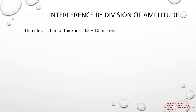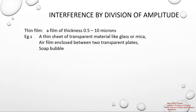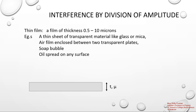So what is a thin film? It can be any transparent film that has a thickness of 0.5 to 10 microns (10 raised to minus 6 meters). Examples of thin films are: a thin sheet of transparent material like glass or mica, an air film enclosed between two transparent plates — if we sandwich two glass plates together a thin air film inside acts as a thin film — a soap bubble, or oil spread on any surface.